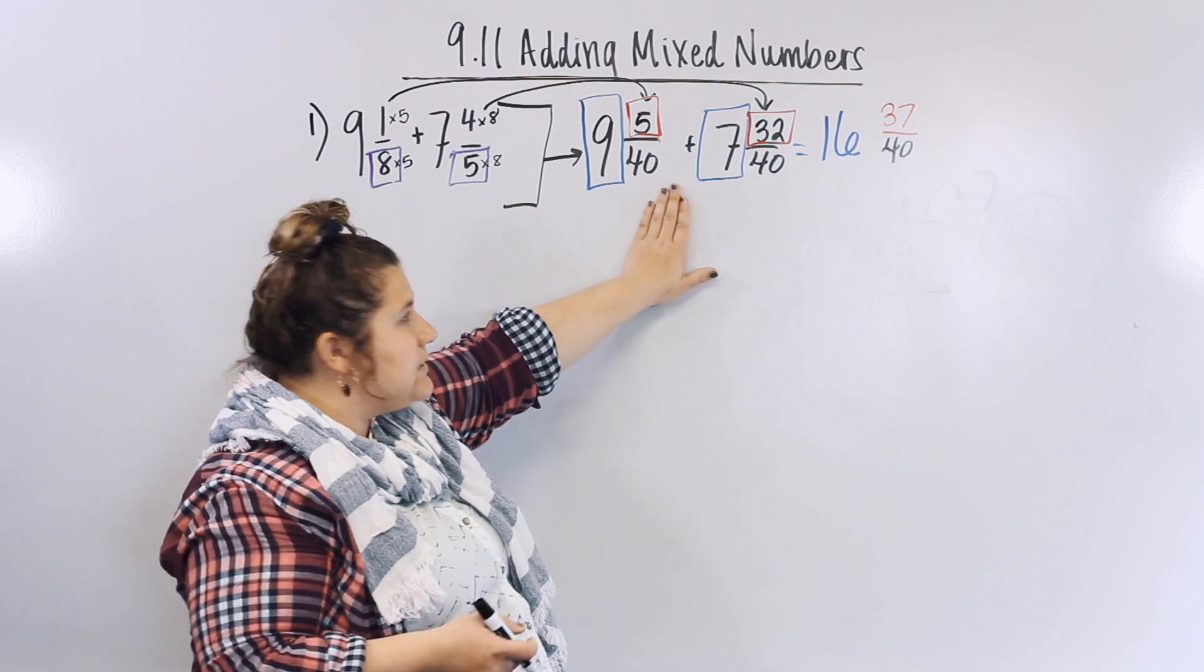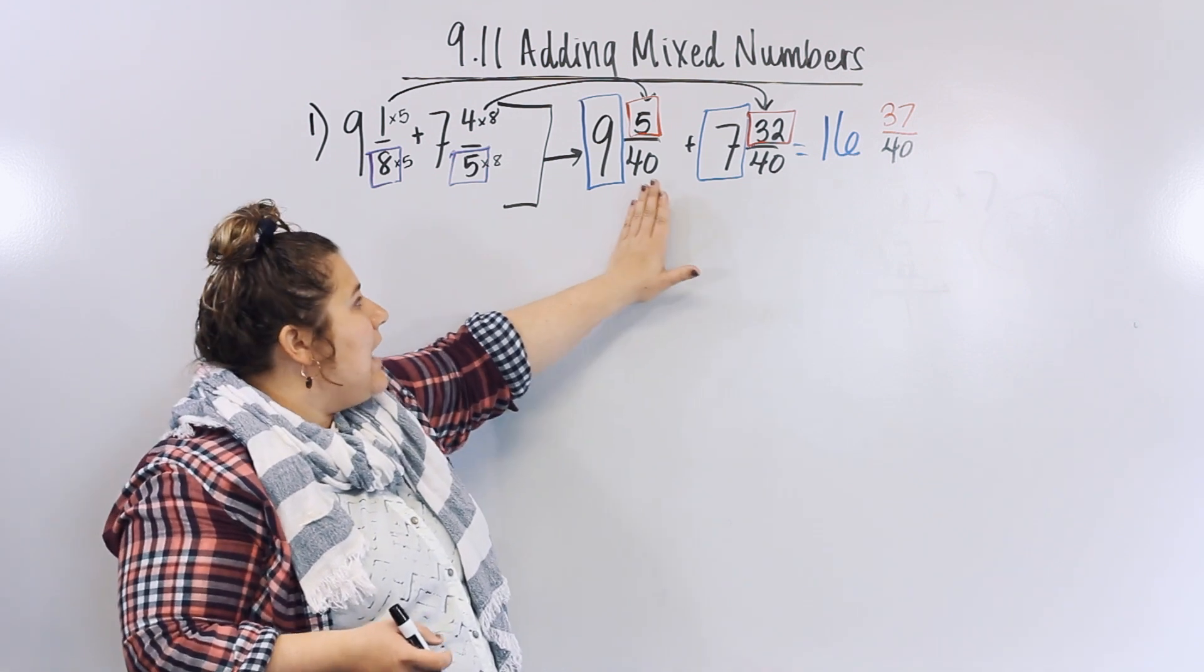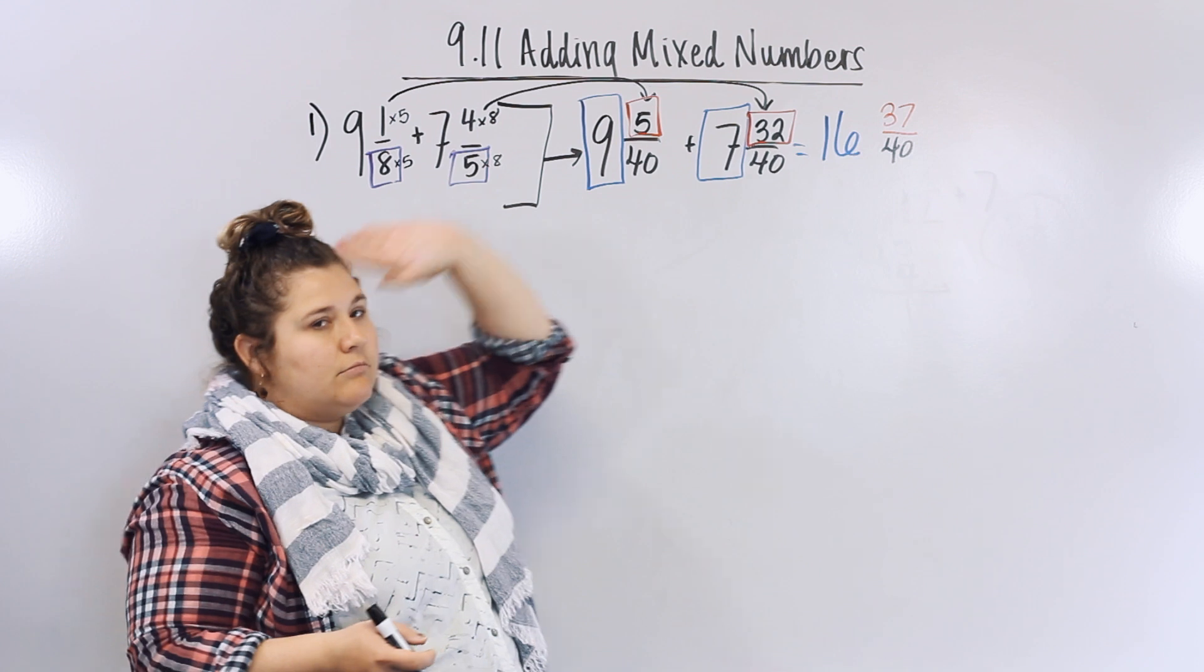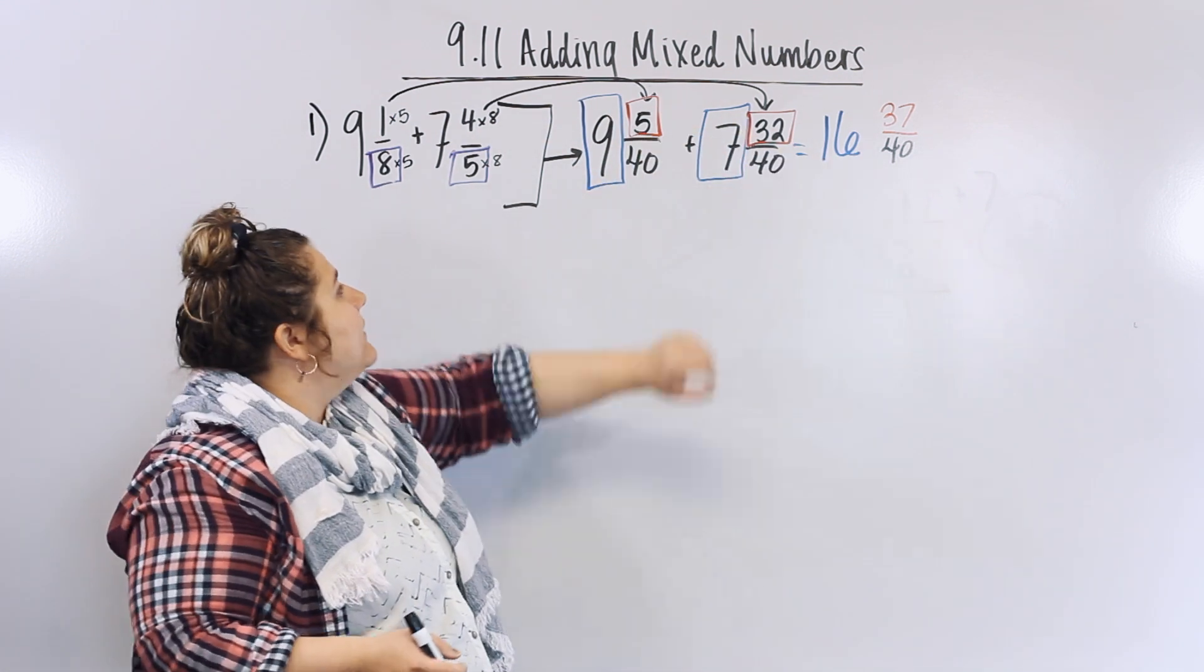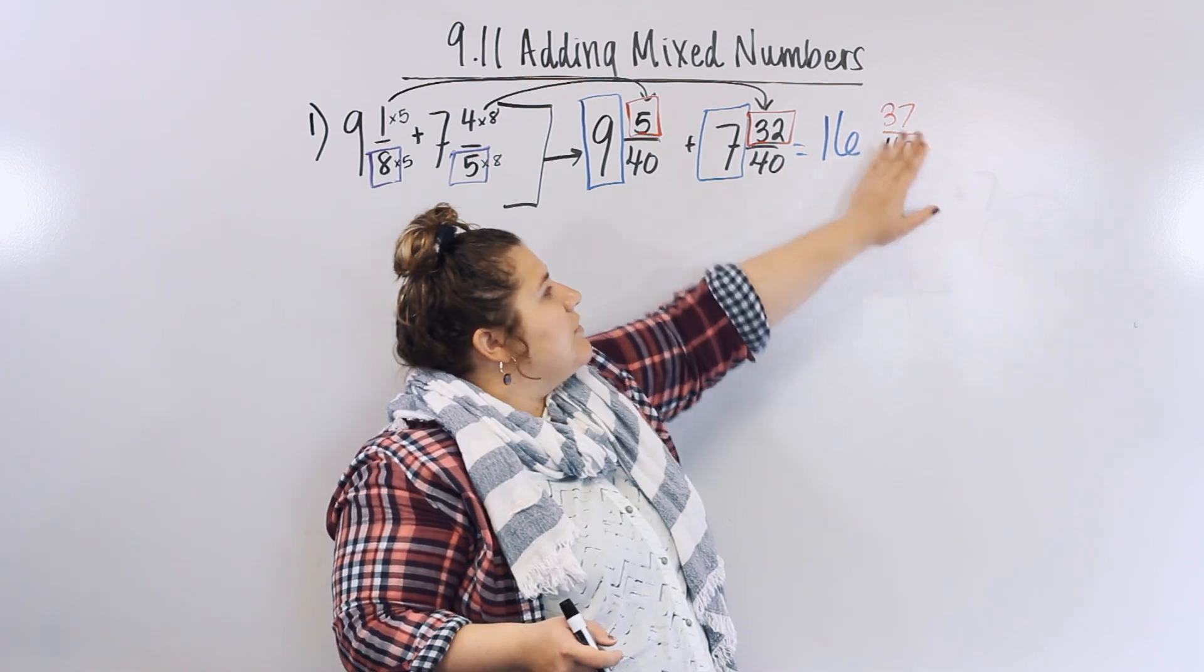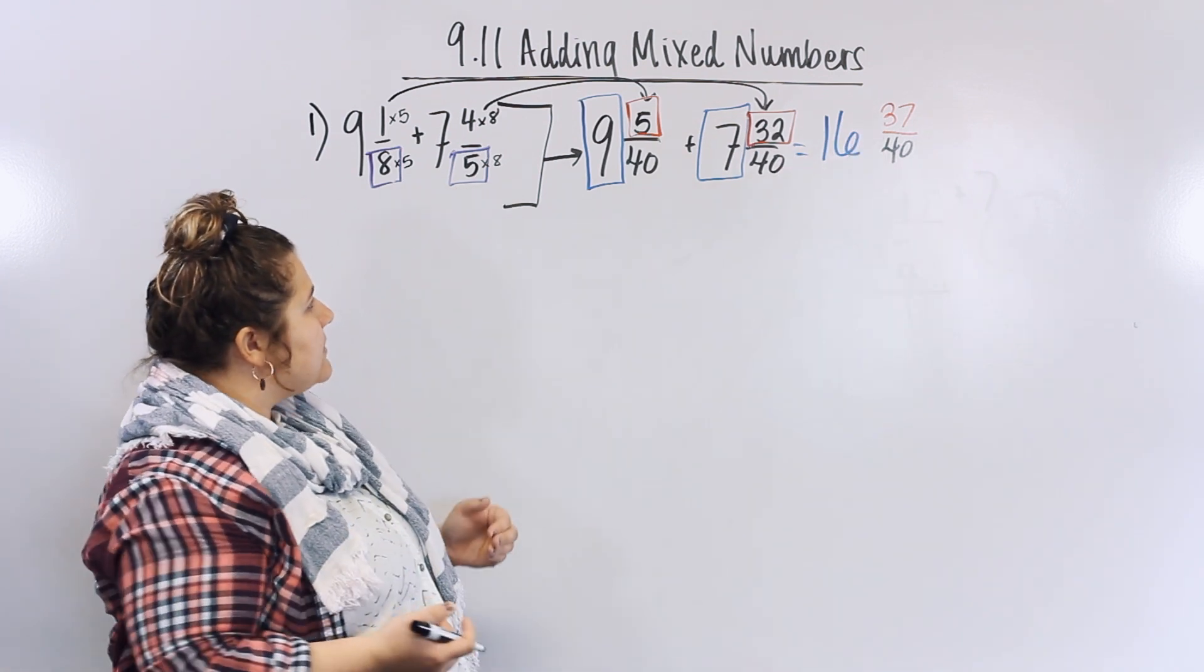I changed my fractions, moved them over here, and now my denominators are the same, so I just add straight across: nine plus seven is sixteen, five plus thirty-two is thirty-seven, and that is our answer.